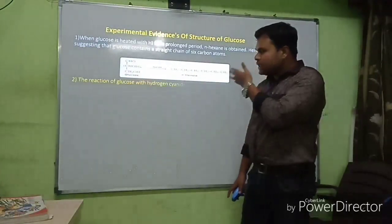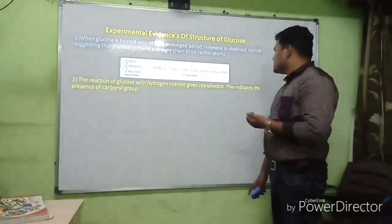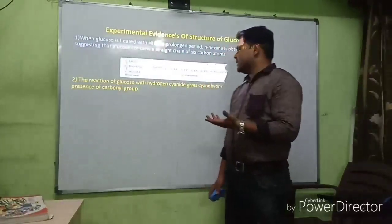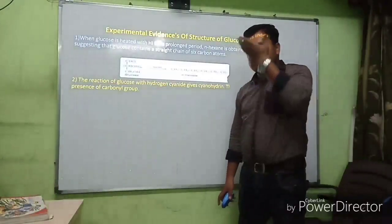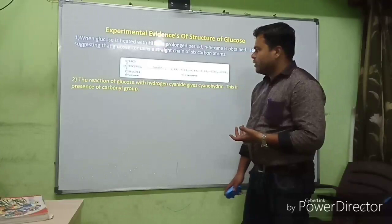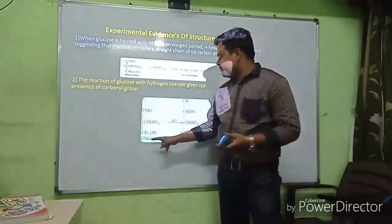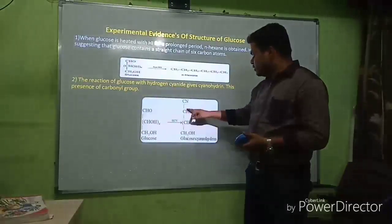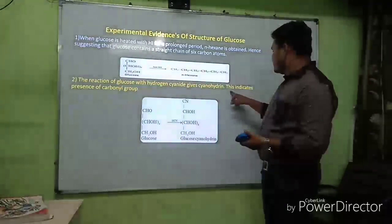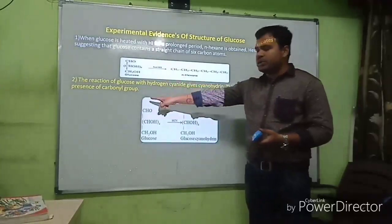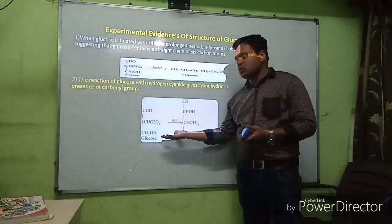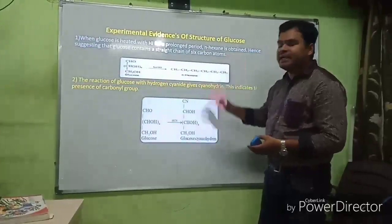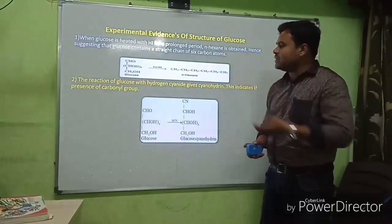The reaction of glucose with hydrogen cyanide gives a cyanohydrin. This indicates the presence of a carbonyl group in glucose. If no carbonyl group were present, this reaction would not give a cyanohydrin. This reaction is specifically used for identification of a carbonyl group.